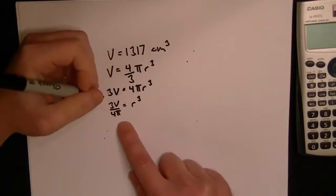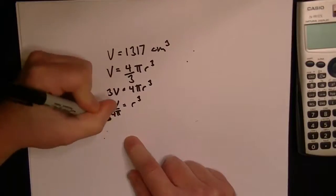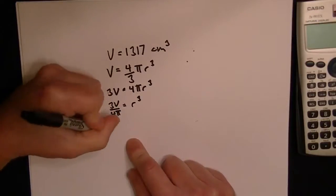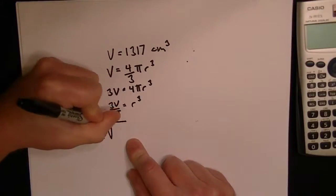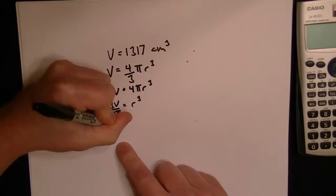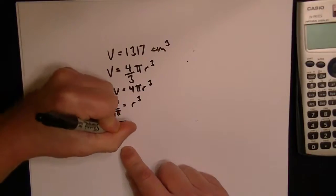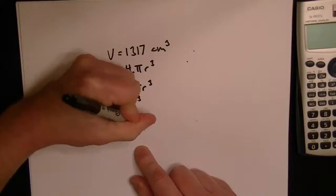Now, you have to get what they call the cubed root. Usually this is written in math, you put a little 3 there, and 3v over 4 pi is equal to r.